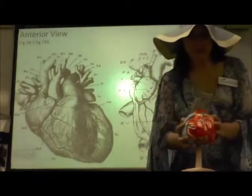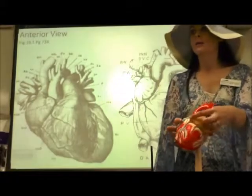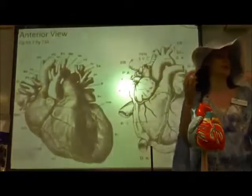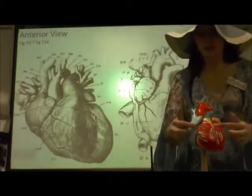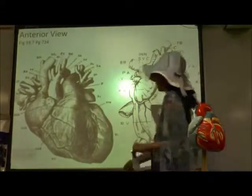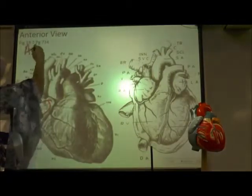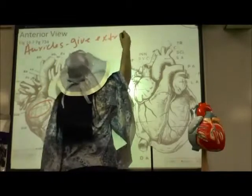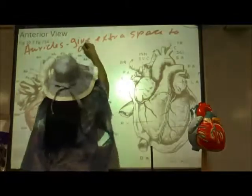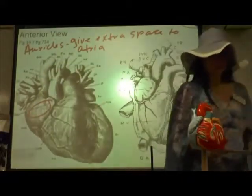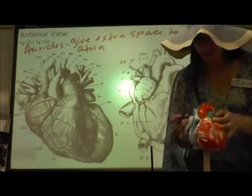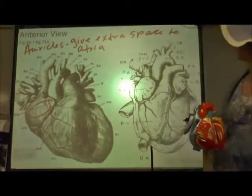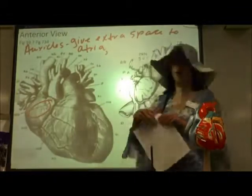Looking at the atria, they have little ridged extensions called auricles that allow extra space so that during increased venous return, such as during exercise, they can accept more blood. Inside the auricles and atria, there are ridges of muscle called pectinate muscles.